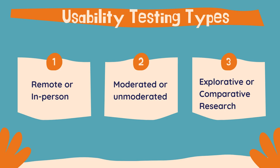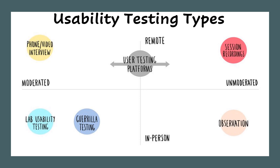Lab usability testing takes place inside a specially built usability testing lab. Test subjects complete tasks on computers or mobile devices while a trained moderator observes and asks questions. A major benefit is the control it provides — all sessions run under the same standardized conditions, making it especially useful for comparison tests. Gorilla testing is the simplest form: going into a public place such as a coffee shop to ask people about your prototype. Participants are chosen randomly and asked to perform a quick usability test, often in exchange for a small gift, to test a wide cross-section of people with no history of the product.